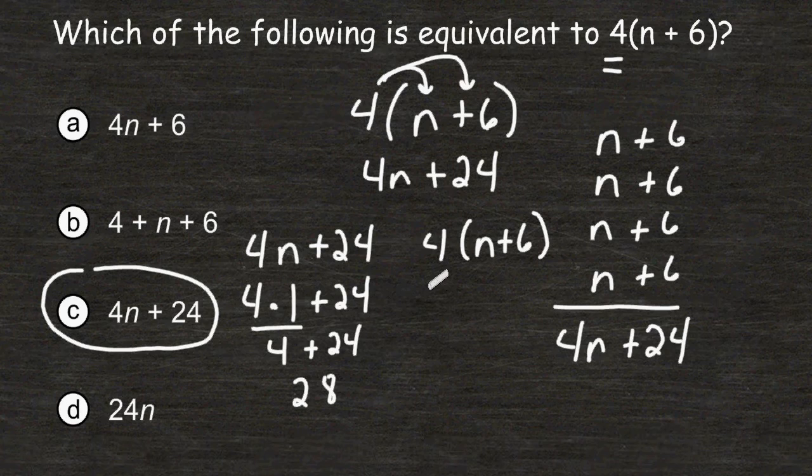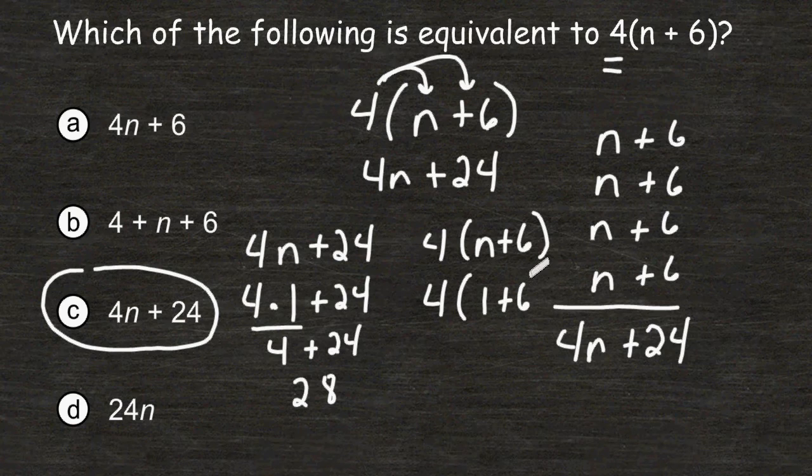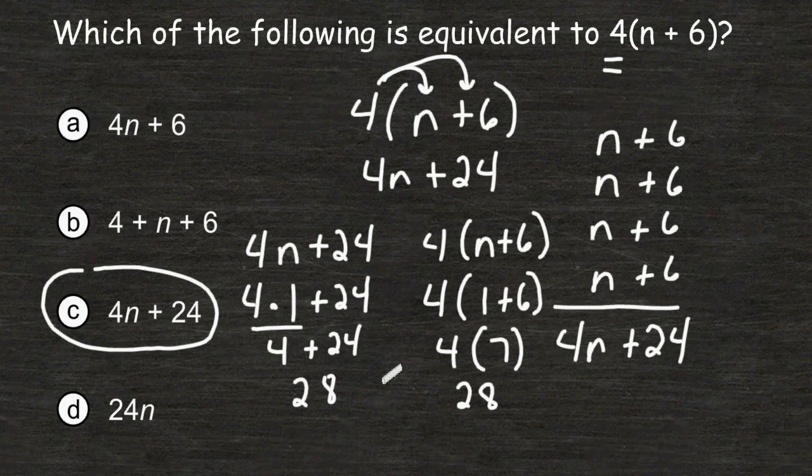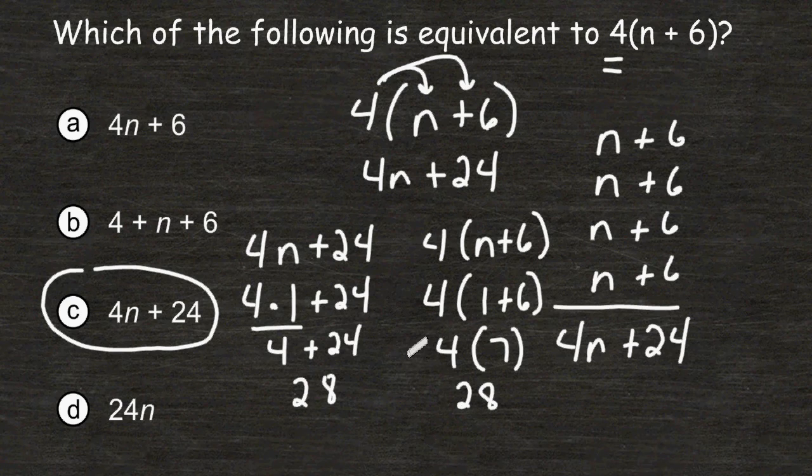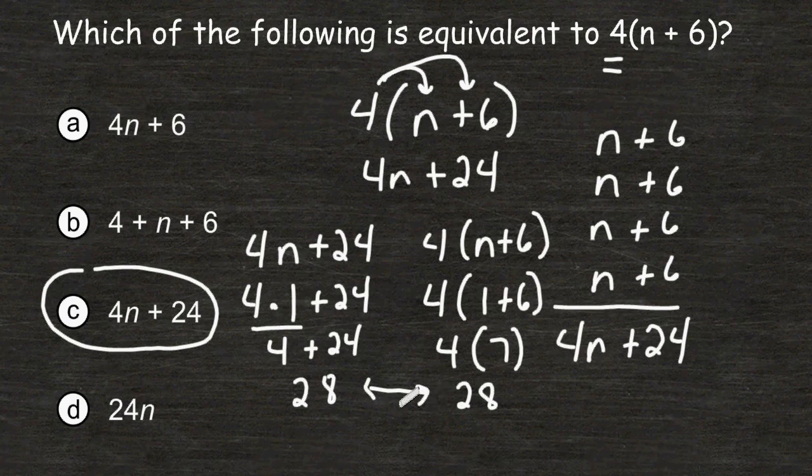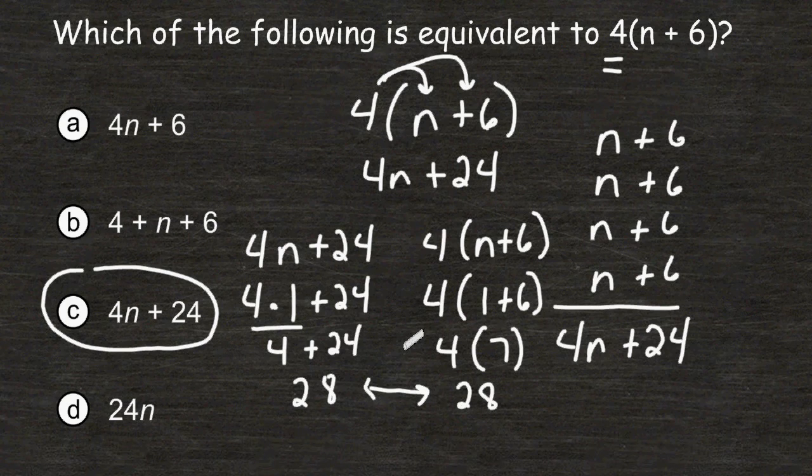Now we have to substitute the same value in for n in the original expression. So we have 1 plus 6, which gives us a total of 7, and 7 times 4 has a product of 28. So you can see that when we plug 1 in for the original expression and the answer we selected, we came up with the same solution, which is 28. You could really have substituted any value that you wanted for n, but you have to use the same value for the original expression as well as the answer that you selected.